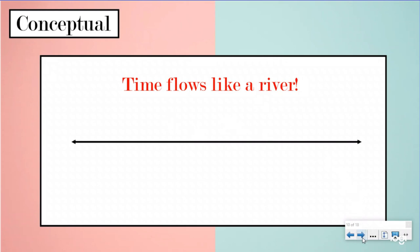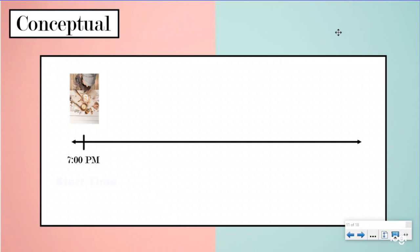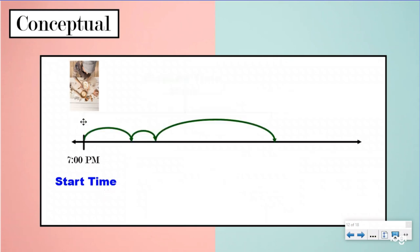You are making something for dinner and you begin at 7 p.m. - you've got your mixing bowls out, mixing and whisking. This is our start time, when we are starting to do the activity. It took 15 minutes to mix everything together, another five minutes to get the ingredients on the baking pan, and then 30 minutes for dinner to bake in the oven. This is the time it took to do all the different things.